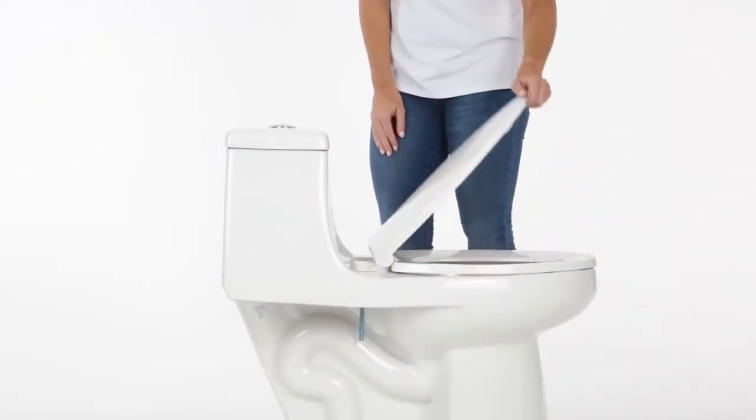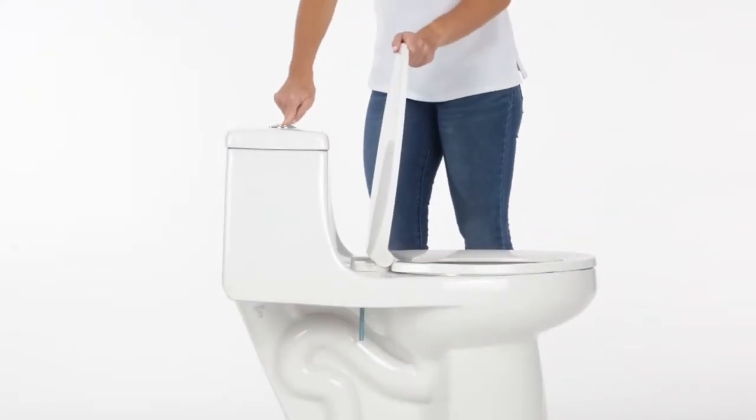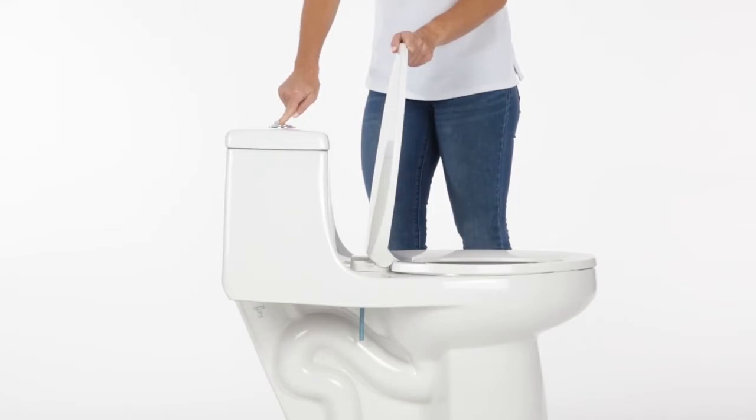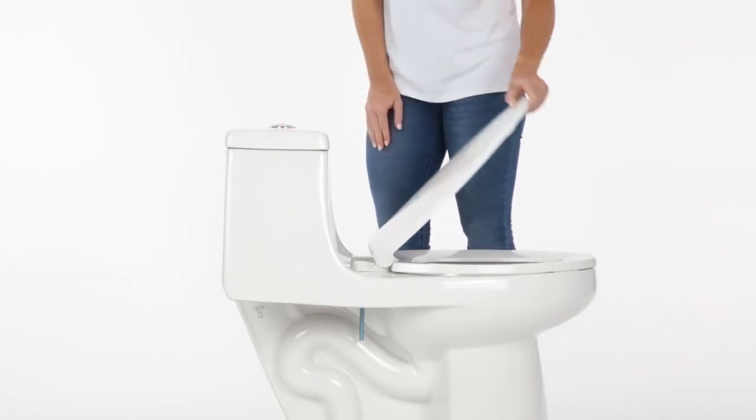Start by turning off the water supply valve located on the wall behind your toilet. Hold the flush handle to flush the toilet and completely drain the tank.